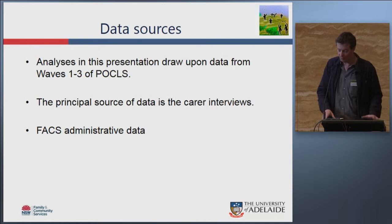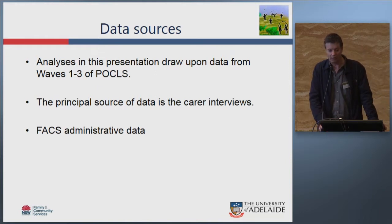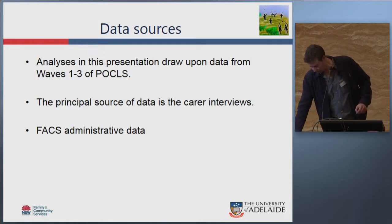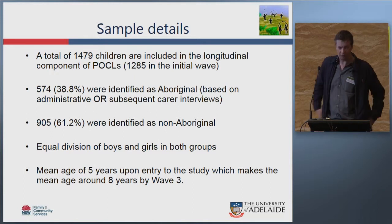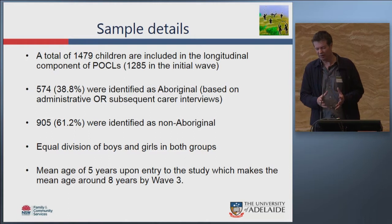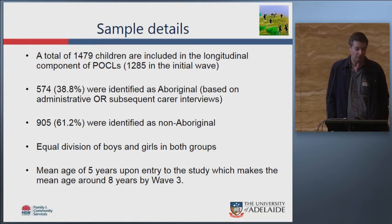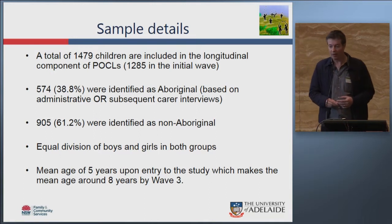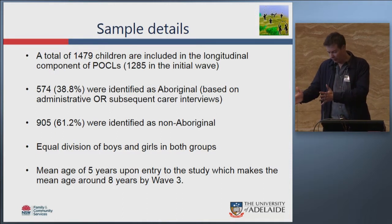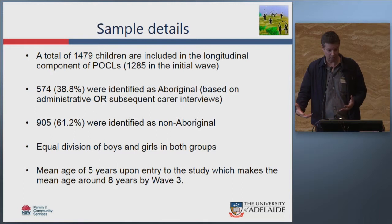The data sources for today's analyses are from waves one to three, principally from the carer interview, and the FACS administrative data was used to validate identification of children as Aboriginal or non-Aboriginal. 1,479 children were included, having completed at least one survey at one of the three waves, with about 870 children having data at all three waves. There is no gender difference between the two groups, so results aren't confounded by gender. The mean age at wave one was five, so by wave three children are on average about eight years old — fairly young children overall.